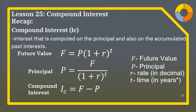Let's have a recap of what we have learned. Compound interest is interest that is computed on the principal and also on the accumulated past interest. The formulas are: for future value, F = P multiplied by 1 plus R raised to T; to obtain the principal, P = F over the quantity 1 plus R raised to T; and to compute for the compound interest, subtract the principal from the future value.